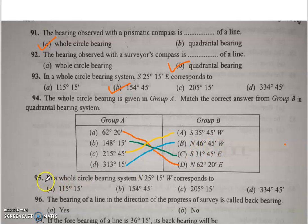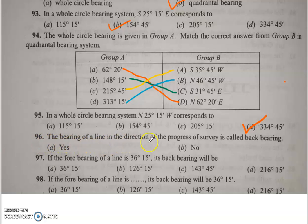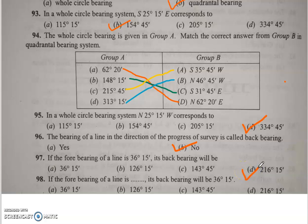Q95: In the whole circle bearing system, N 25°15' W corresponds to 334°45'. Q96: The bearing of a line in the direction of the progress of survey is called the fore bearing — answer is no, it is called fore bearing, not back bearing. Q97: If the fore bearing of a line is 36°15', its back bearing will be 216°15'.